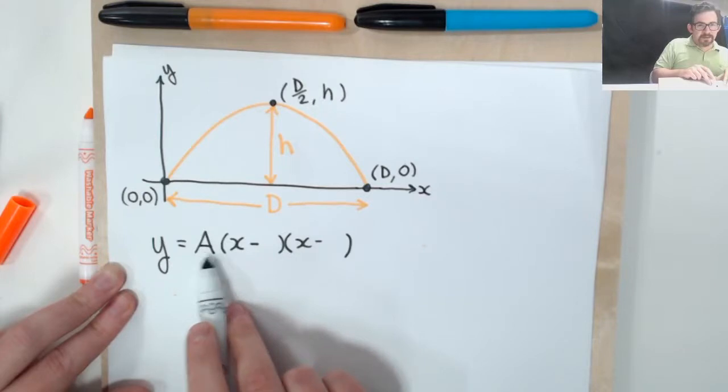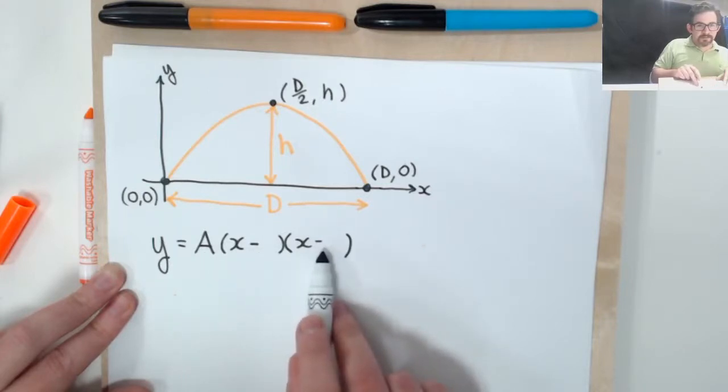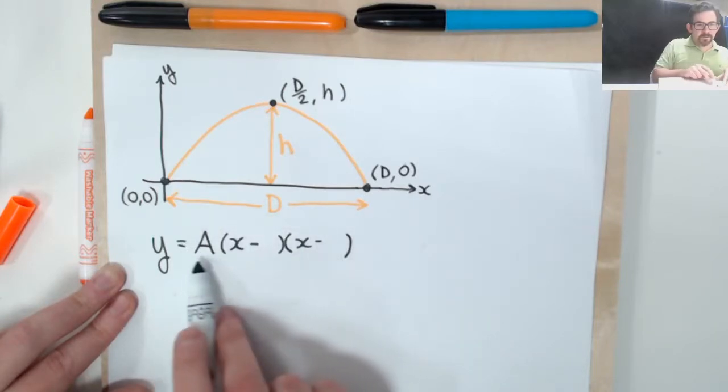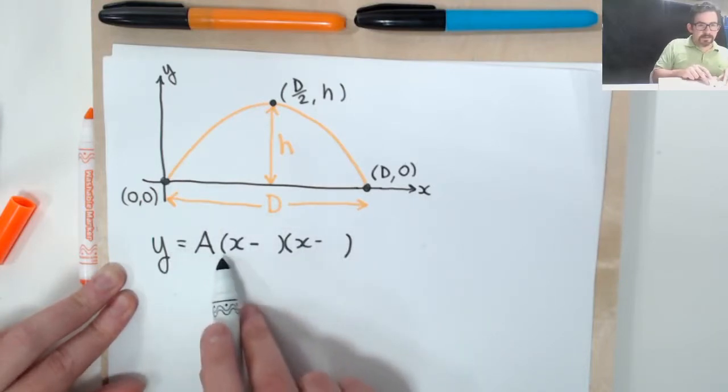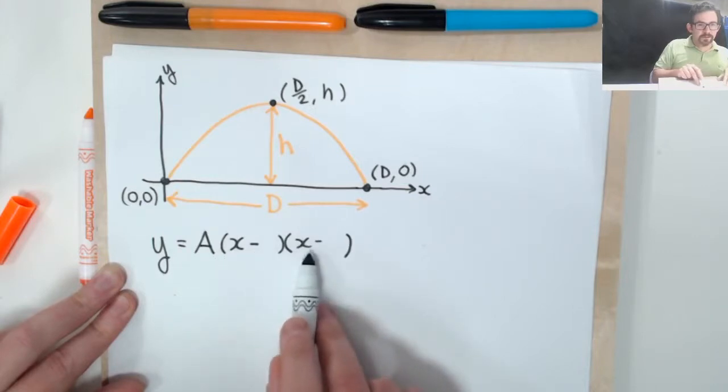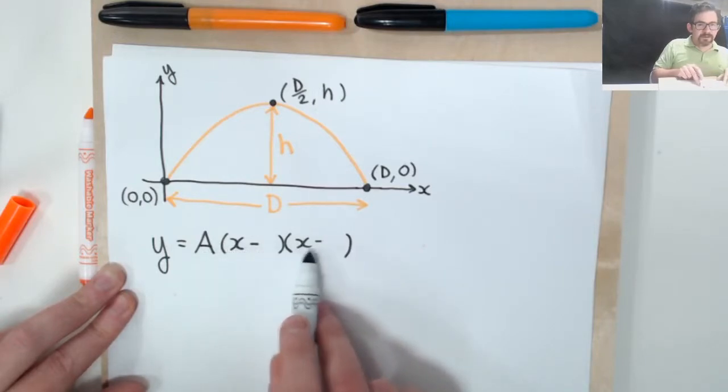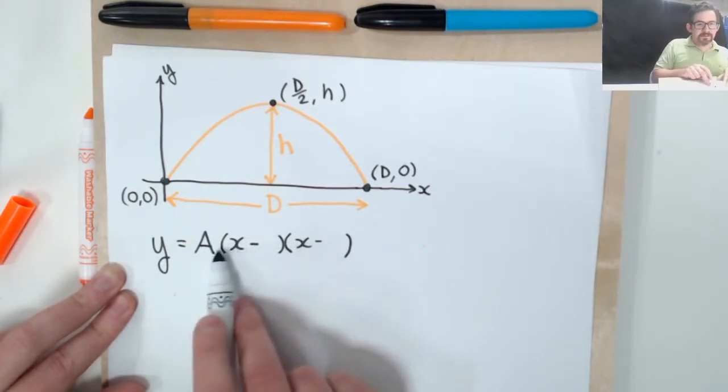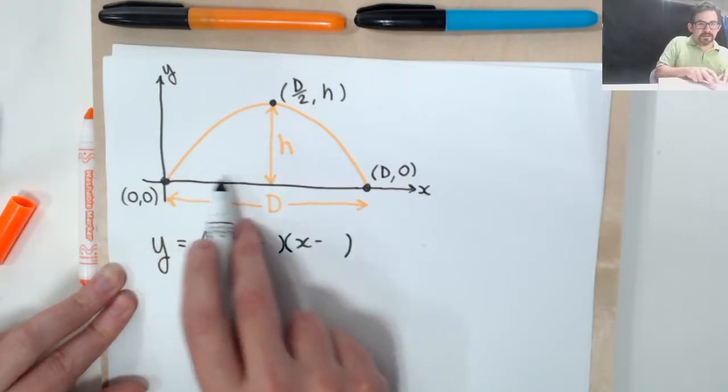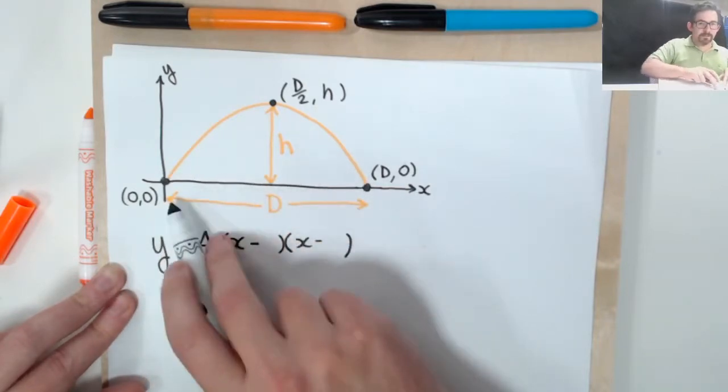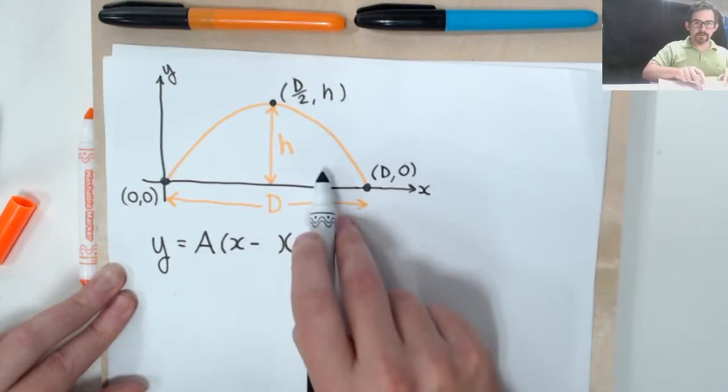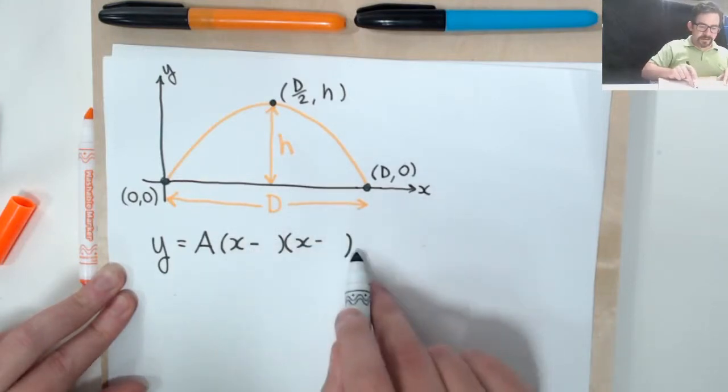So if I have a times some other thing times some other thing, I have three factors here, at least how many of those factors must be zero if y is going to be zero? Well, what I know is one of them, at least one must be zero to make y equal to zero. Now if a was zero, that would not be very interesting, because we would not have a function of x. If I just had y equals zero, that's just a flat line here. So that's not going to give me this kind of motion.